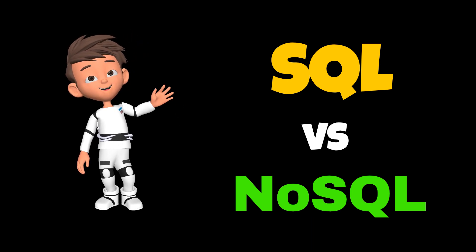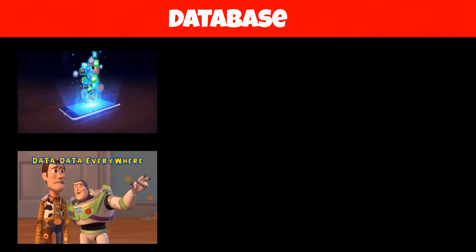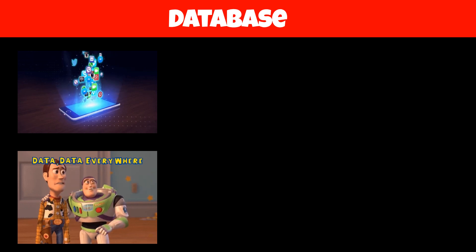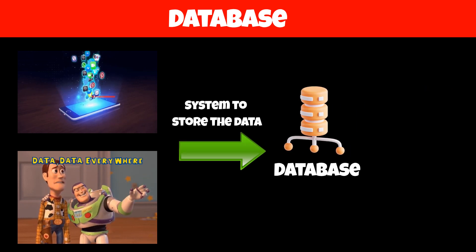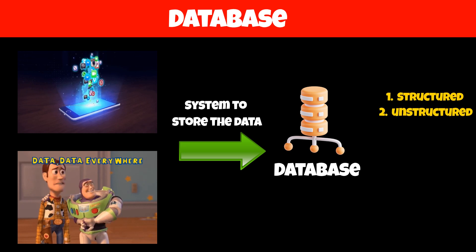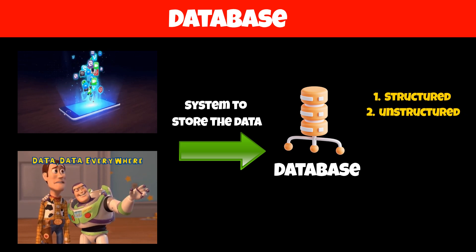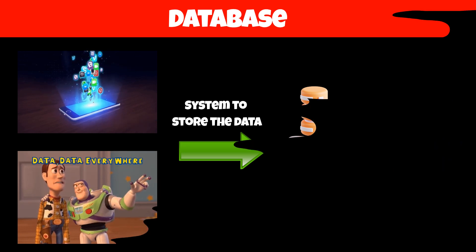SQL vs NoSQL — which one should you choose while designing a system? Every day, millions of bytes of data are generated, so we need efficient systems to store it. These systems are called databases. Data in a database is stored in two main formats: structured and unstructured data, which are also known as SQL and NoSQL databases.